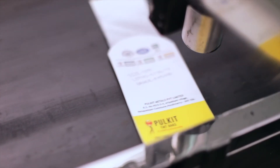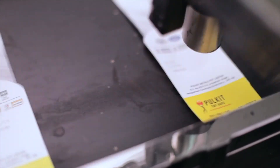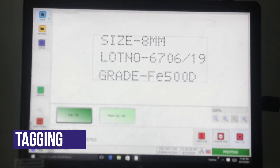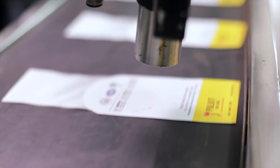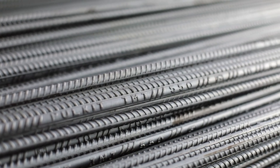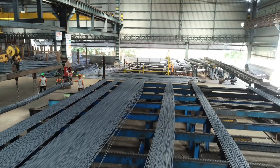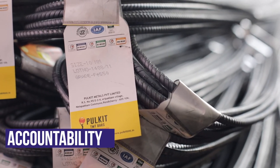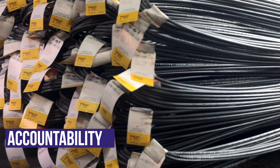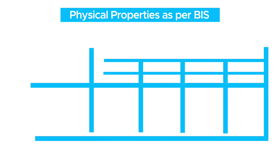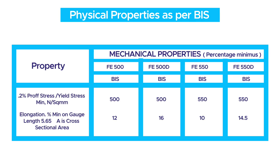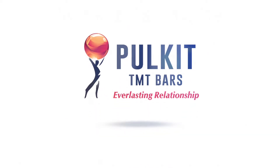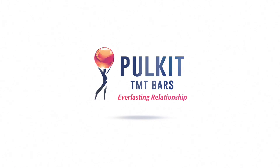A quality-conscious and reputed manufacturer will tag every bundle with a lot or batch number and other details that help in backtracking steel rods all the way back to its ore, thereby providing accountability with relation to physical parameters. It is essential that all the above physical parameters fall within the prescribed Bureau of Indian Standards (BIS) norms while choosing the right TMT bars, issued in public interest by Pulkit TMT bars.